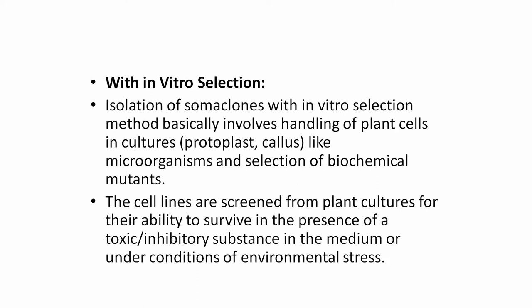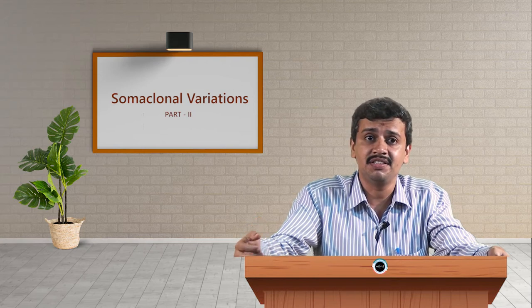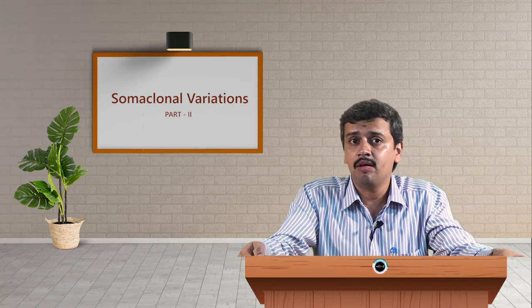Isolation of somaclonal variants with in vitro selection method basically involves handling of plant cells in culture, which could be a callus, a protoplast, or any resulting structure in tissue culture — maybe an embryo, a shoot, or a root. Like microorganisms, even these cells could be handled, and you can identify the variations because of their biochemical nature or any physical appearances. The cell lines are screened from plant cultures for their ability to survive in the presence of a toxic or inhibitory substance in the medium, or under conditions of environmental stress.